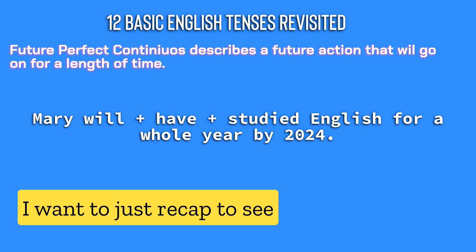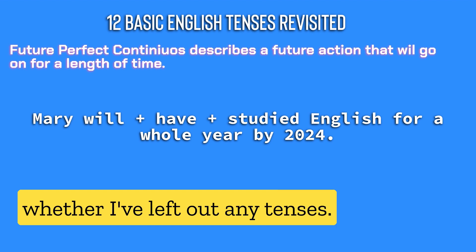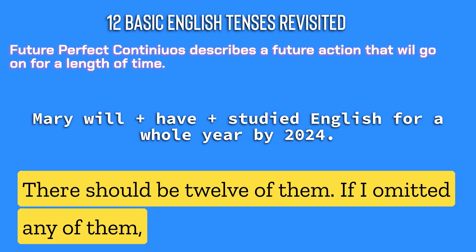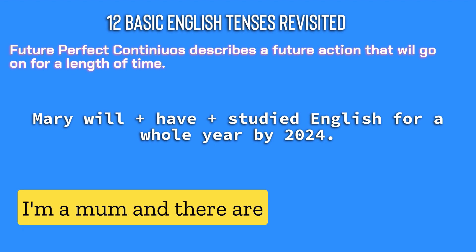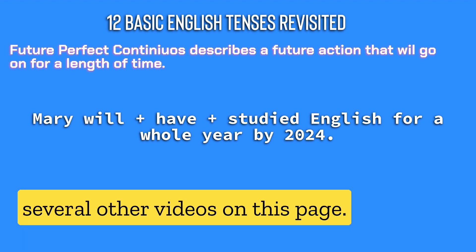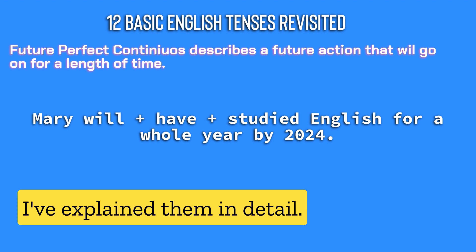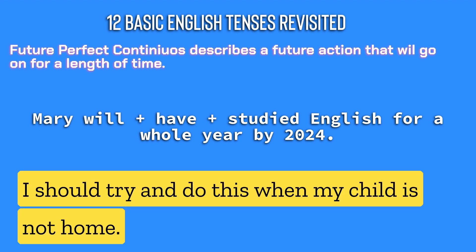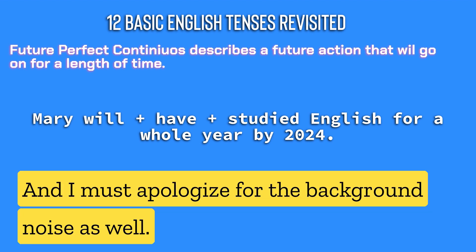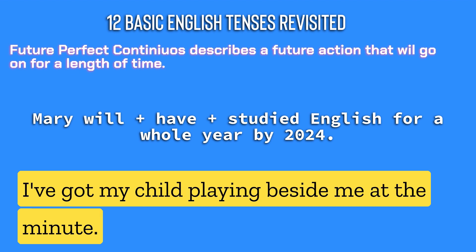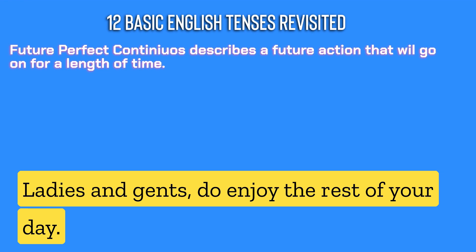I want to just recap to see whether I've left out any tenses — there should be 12 of them. If I have omitted any, there are several other videos on this page that will explain them in detail. I must apologise for the background noise as well — I've got my child playing beside me at the minute. Do enjoy the rest of your day. Bye, thank you.